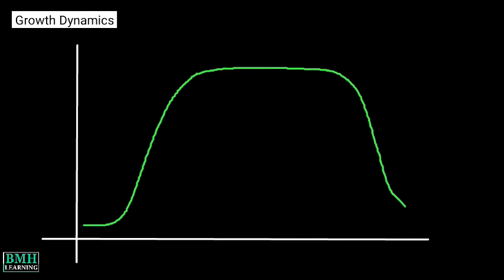Growth Dynamics. The growth of an axenic culture of microalgae is characterized by five different phases. The first is the lag or induction phase. During this phase, little increase in cell density occurs. It is relatively long when an algal culture is transferred from a plate to liquid culture. However, cultures inoculated with exponentially growing algae have short lag phases.